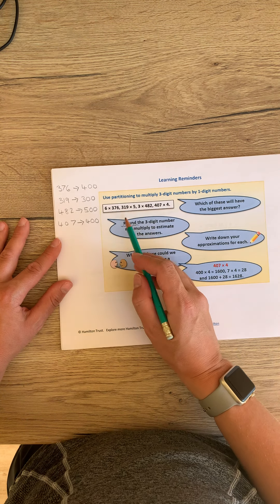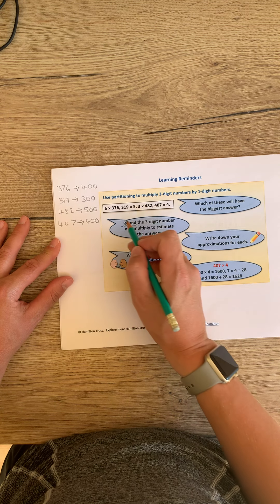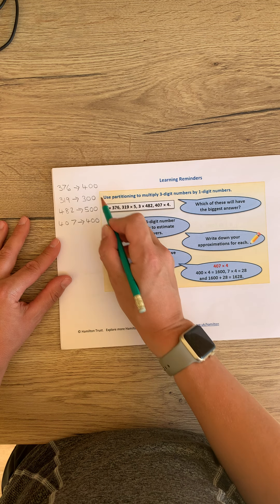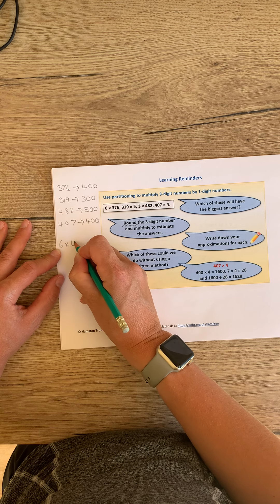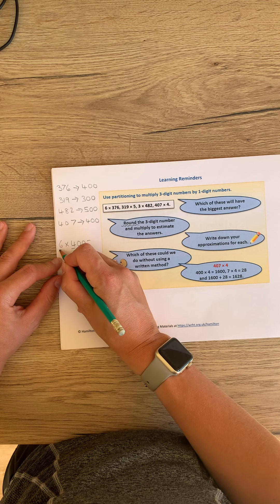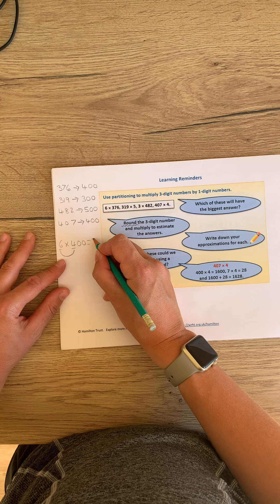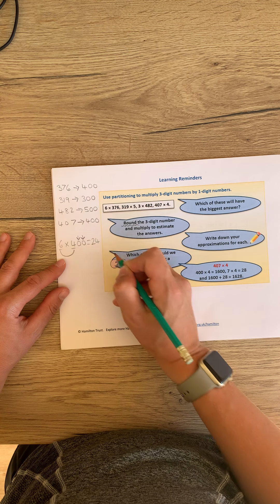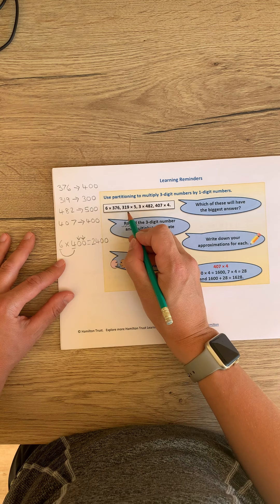Using these new rounded numbers, it enables you to give a really good estimation for the number sentences. So the first one, it would be 6 multiplied by 400. Use your smile method if you can. 6 multiplied by 4 is, well done if you said 24. Two place value holders means we multiply our answer by 100. So that would be our estimation for this one, 2400.